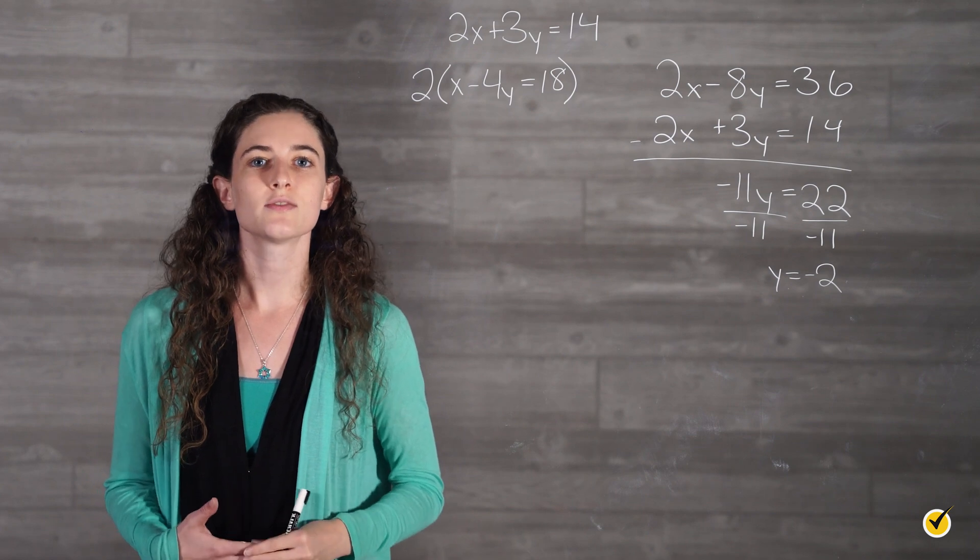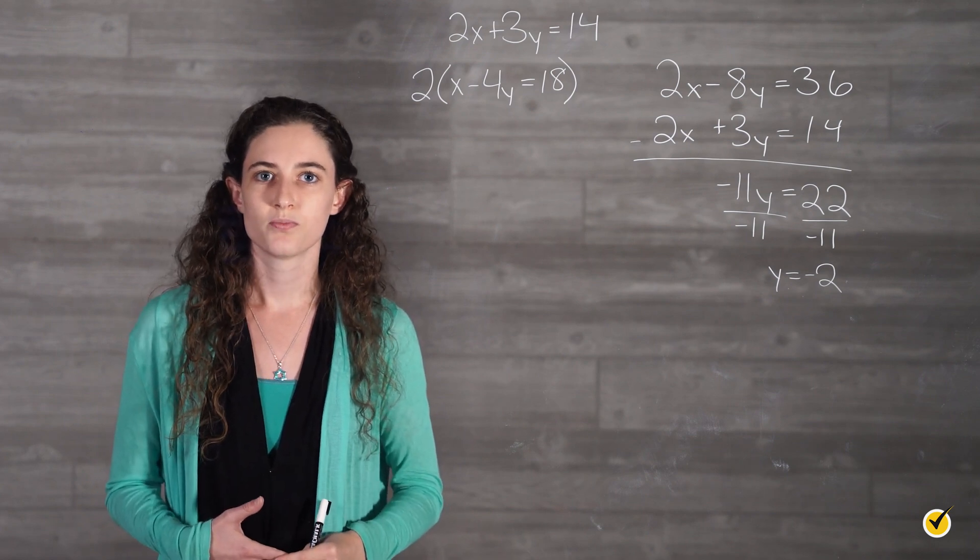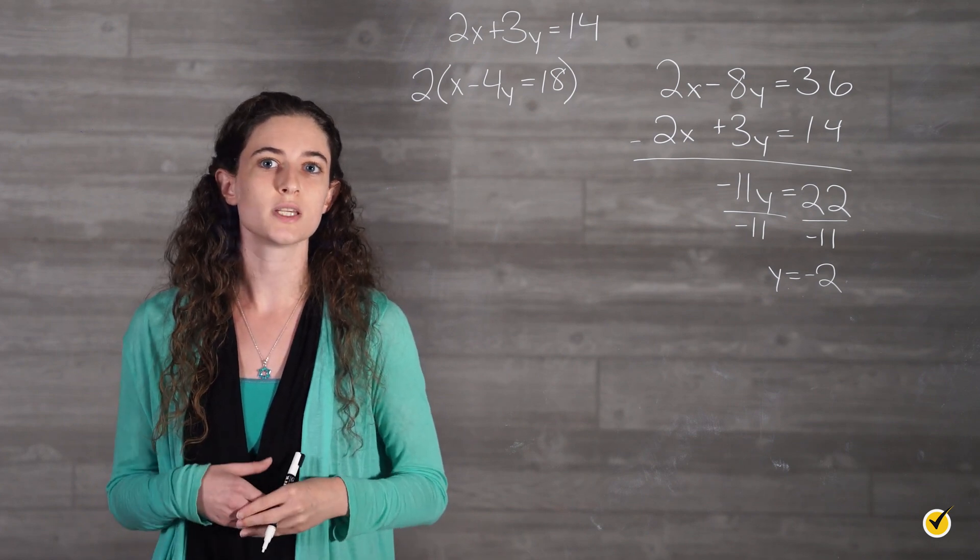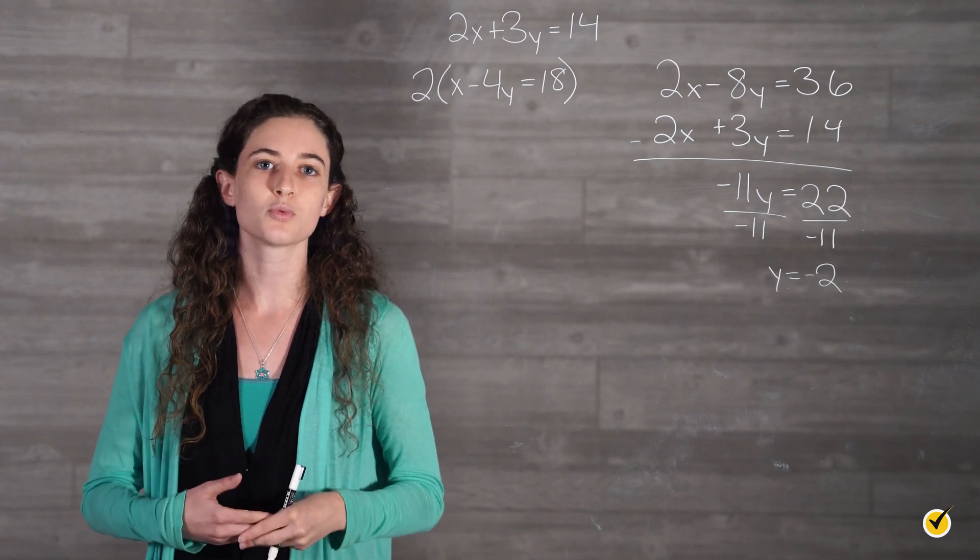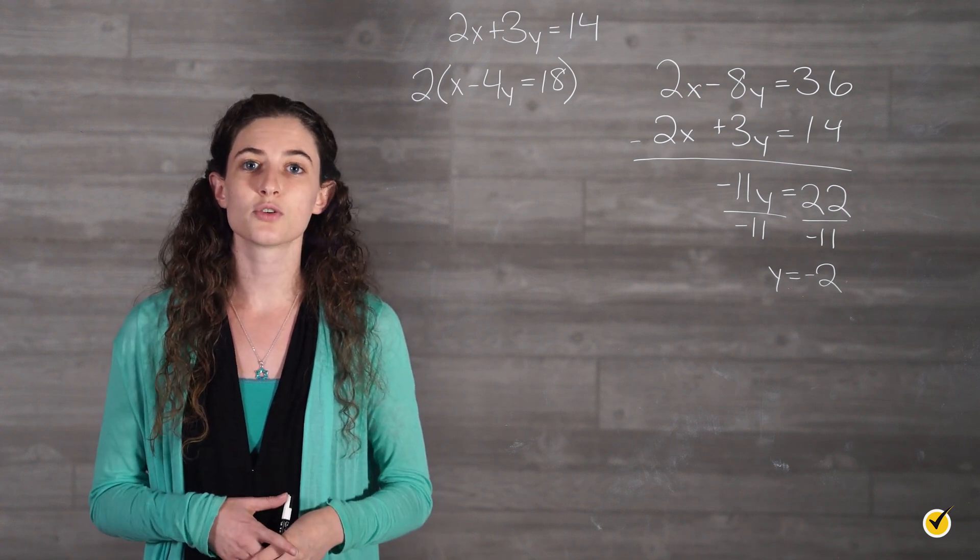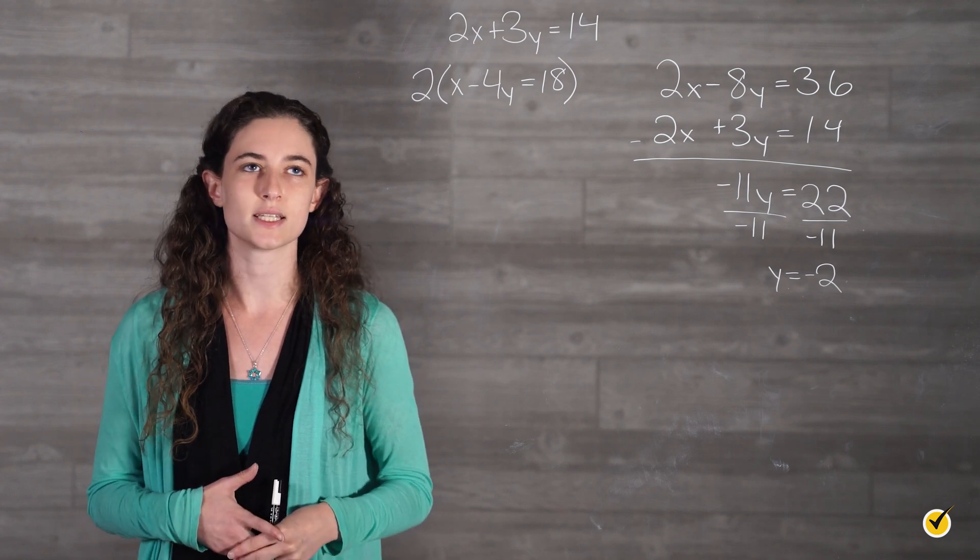Solving this new equation gives us that y is equal to negative 2. And to find our x term, we choose either equation and plug in this y value to solve for x. I am going to use the equation x minus 4y equals 18.